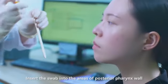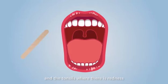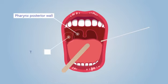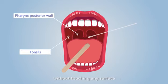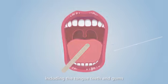Insert the swab into the areas of posterior pharyngeal wall and the tonsils where there is redness. Wrap the swab over the areas firmly and gently to obtain a good sample. Remove the swab from the mouth without touching any surface including the tongue, teeth, and gums.